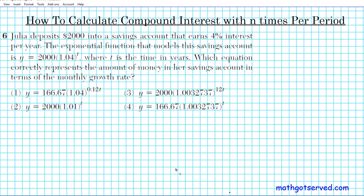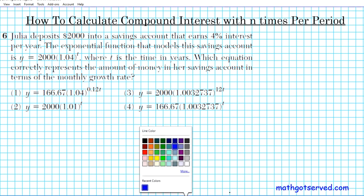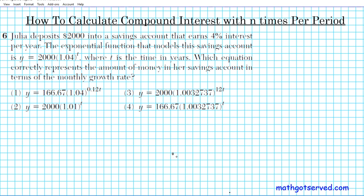All right, so to do this problem, we're going to take a look at two formulas. The formula for exponential growth rates when you have the time period being annually, like one time a year, and then we're going to take a look at what the formula is if it's compounded n times per year.